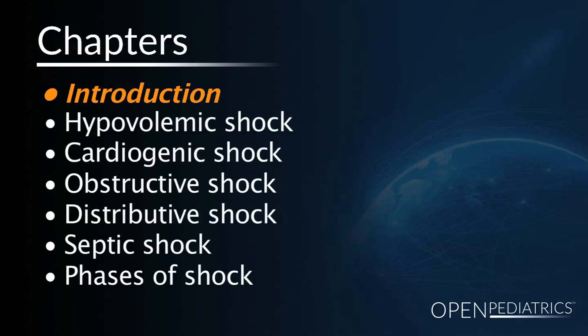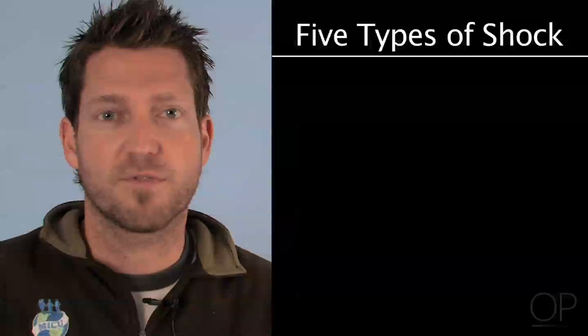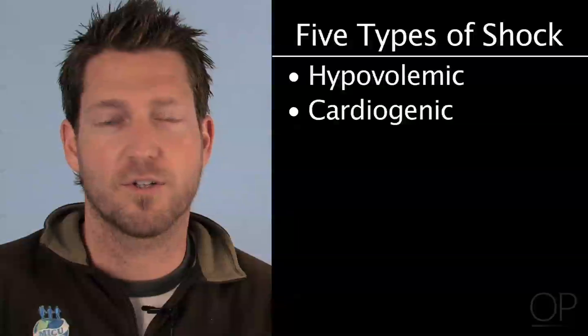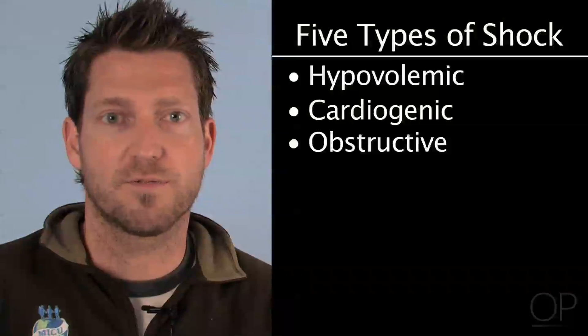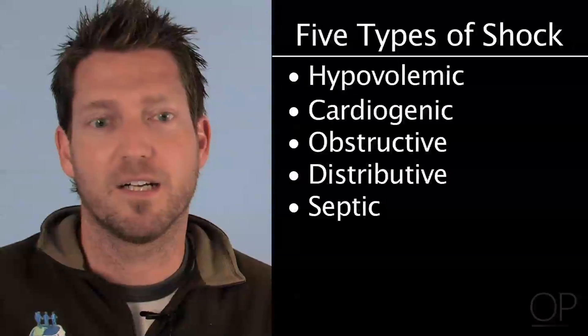So what is shock? It's a tough question and a difficult concept to define, but overall it can be categorized as an acute complex state of circulatory dysfunction that results in failure to meet the metabolic demands of the tissue. There are generally considered to be about five types of shock, though at any point a patient may exhibit more than one. Those categories are hypovolemic shock, cardiogenic shock, obstructive shock, distributive shock, and septic shock. We'll go through each category and talk about the etiologies and pathophysiologies.